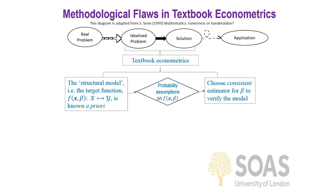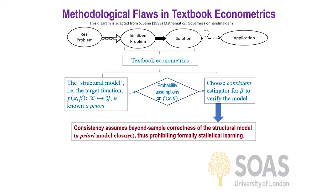Especially for students who have studied economics before, you realize that in textbook econometrics, a structural model — alternatively known as the target function in machine learning — is assumed to be given and known prior to any data analysis. Textbook econometrics then moves on from this assumption, adding assumptions about probability distributions to derive a consistent estimator for the given structural model. This means that the concept of consistency assumes those structural models are globally correct and fully known without being tested by data.